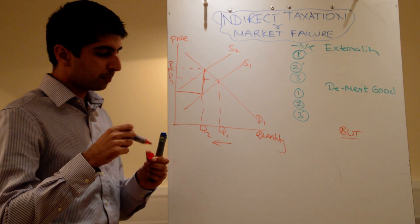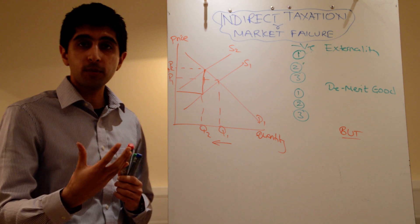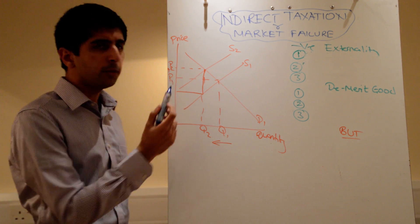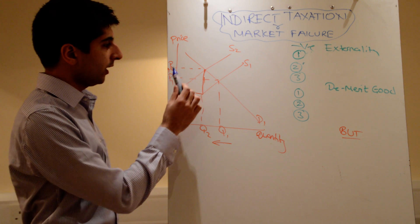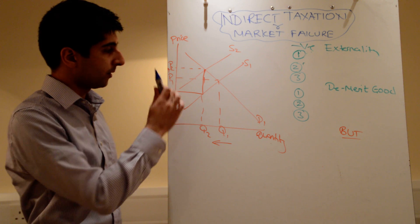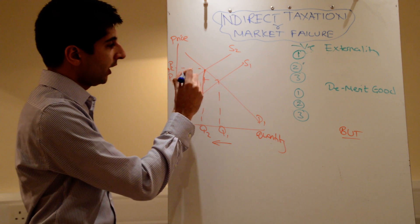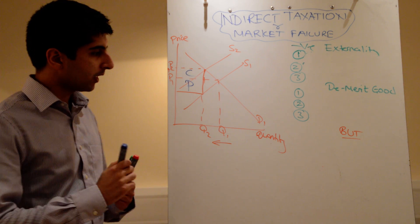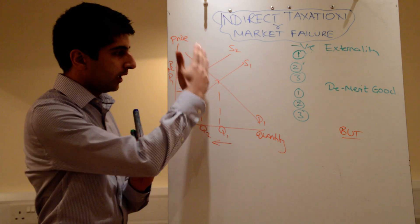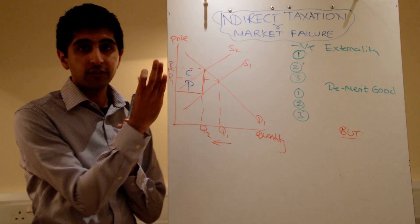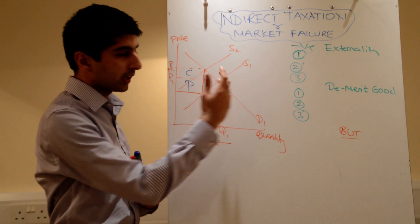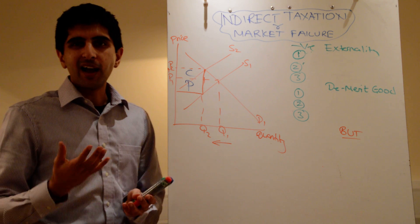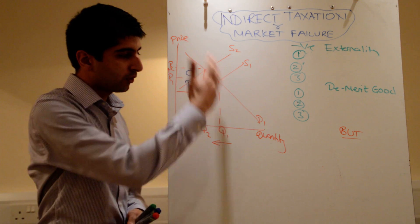Going further, we can split up this box into different areas to represent what the consumer pays and what the producer pays of this tax. The consumer simply pays the difference in price from P1 to P2. The other part of the box is then paid by the producer. What we can show is that when demand is more inelastic, consumer pays a much higher burden. Whereas when the demand is more elastic, consumer pays a much lower burden, and the producer pays a higher burden. So who pays how much of the tax depends on the elasticity of demand.